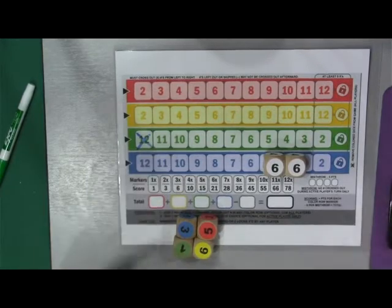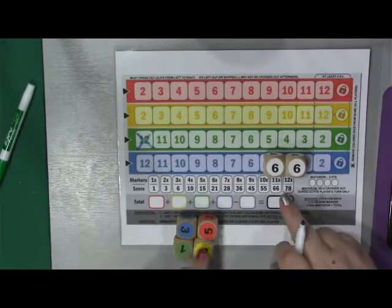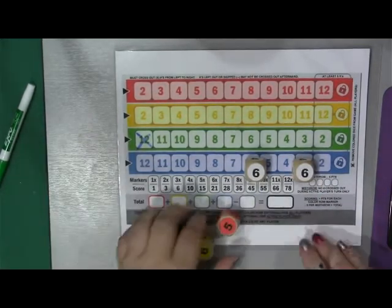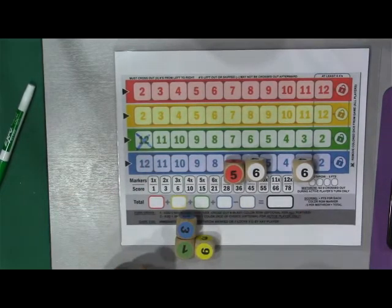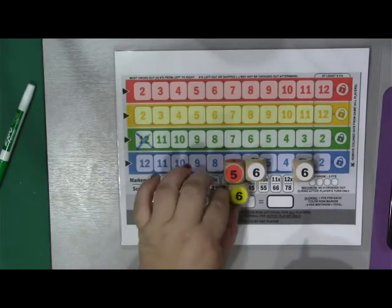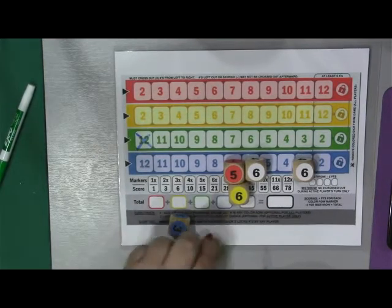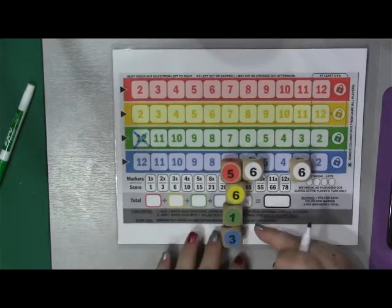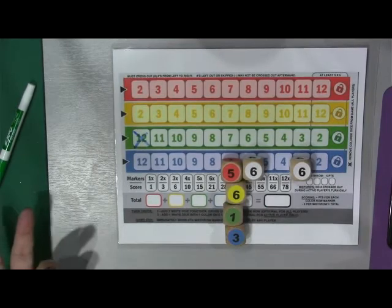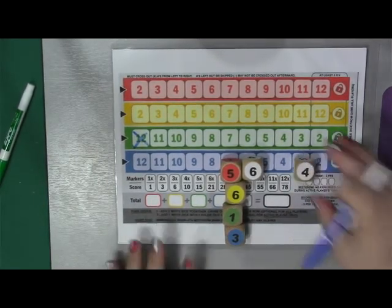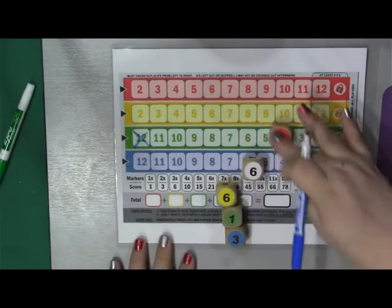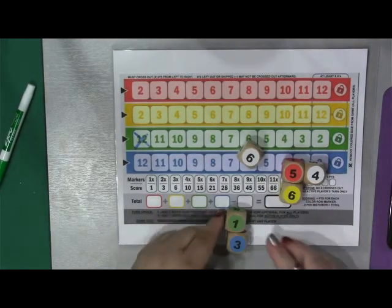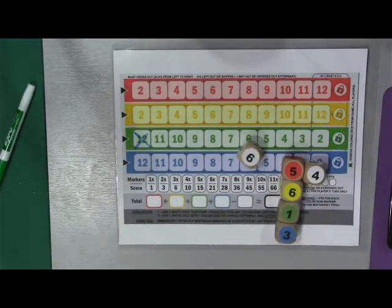The next thing is that you, as the active player, have a second option, which is to take one of the white dice and make a secondary combination. So you could make an 11 that's red, you could make a 12 that's yellow, you could make a 7 that's green, and you could make a 9 that's blue. And just for argument's sake, if this had been a 4, then you would make possibly a 9 that's red, a 10 that's yellow, a 5 that's blue, and a 7 that's blue.